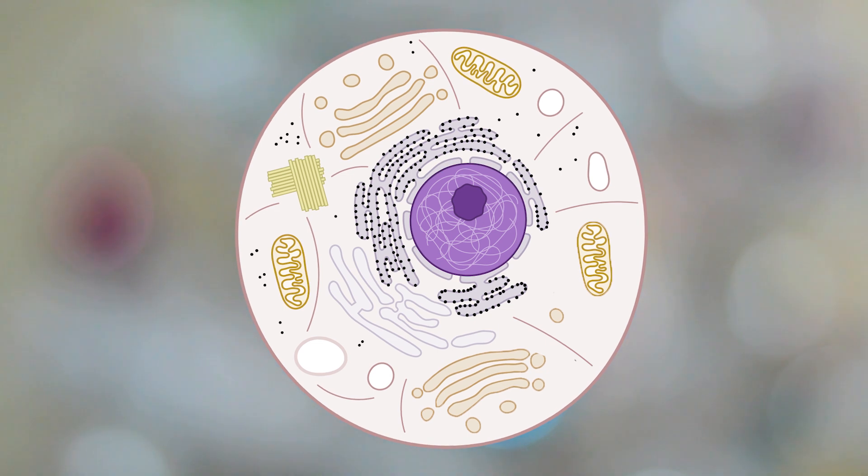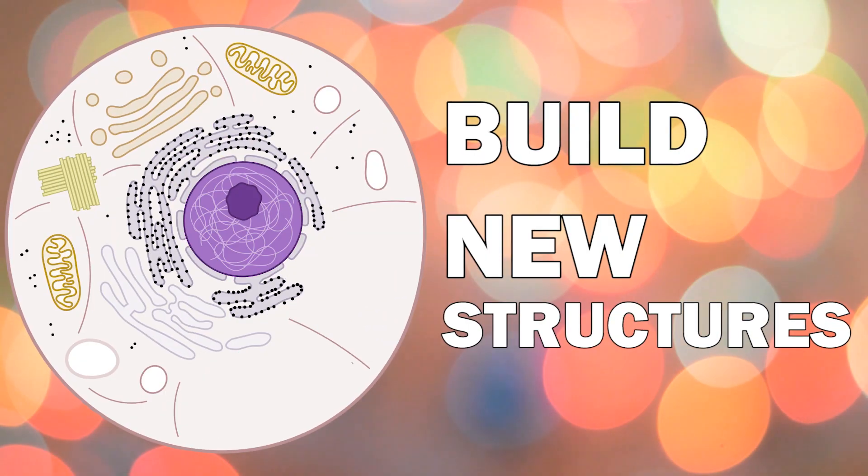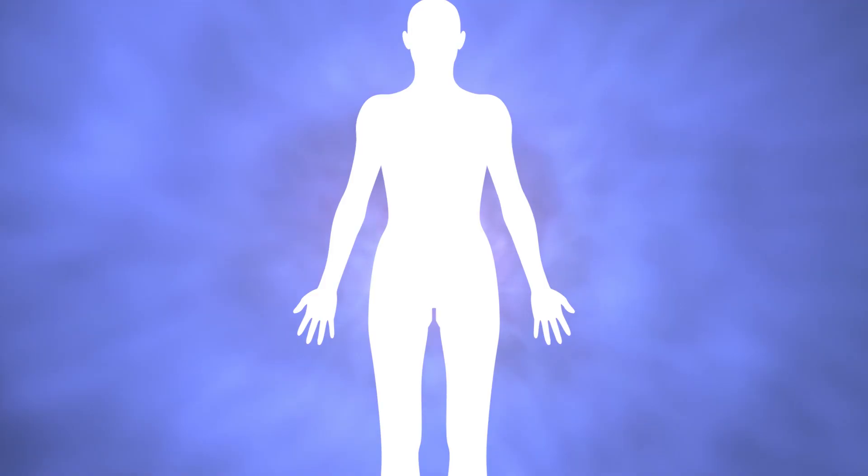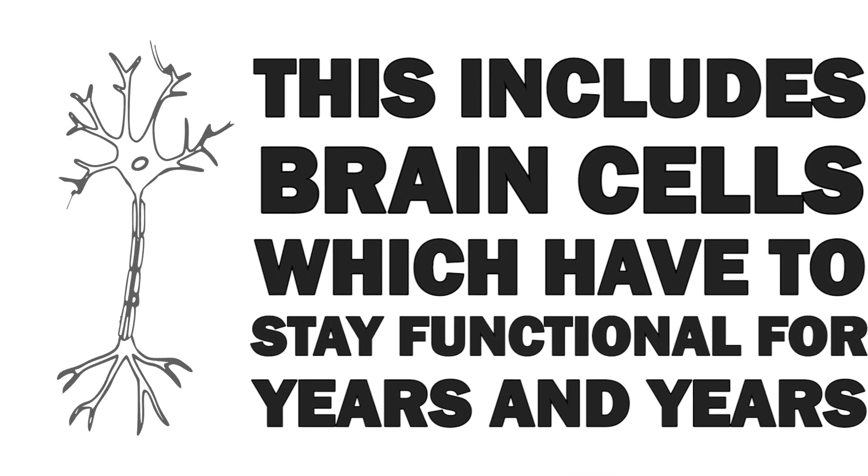And then finally scientists could connect all the dots when they started to understand how aging works. Our cells have to stick with us throughout our lives and constantly perform their tasks. This can be highly stressful and damage parts of the cells. Autophagy is important for our cells. It enables them to recycle all damaged parts to build new structures and renew themselves. There are different forms of autophagy in the body. But in general, autophagy is indispensable for regions where cells have to survive for long periods of time. This includes brain cells, which have to stay functional for years and years.